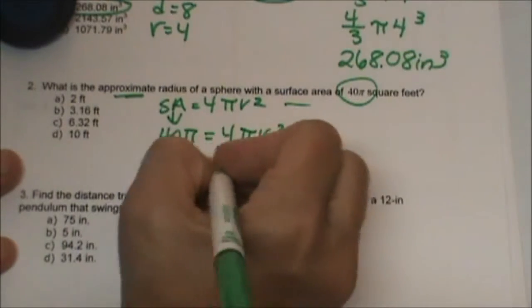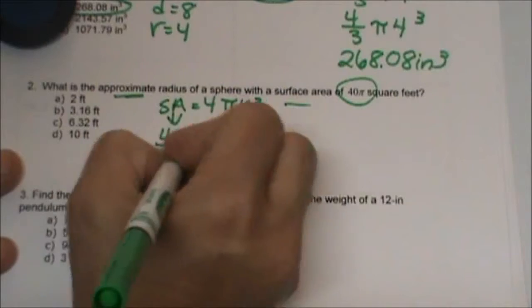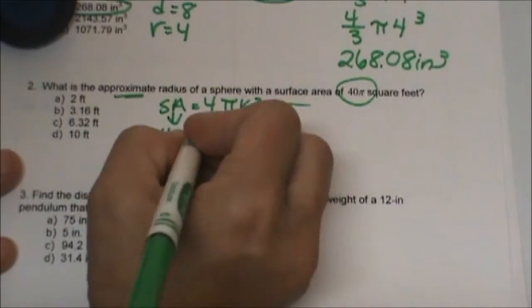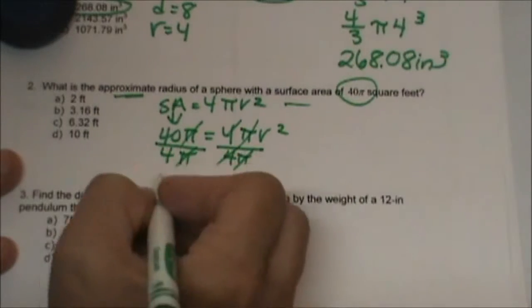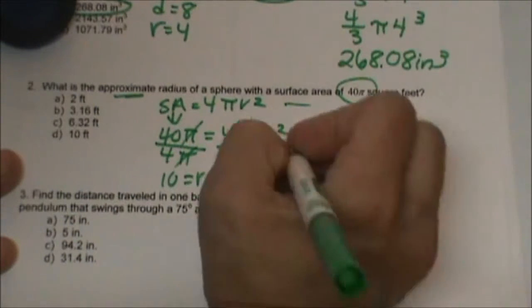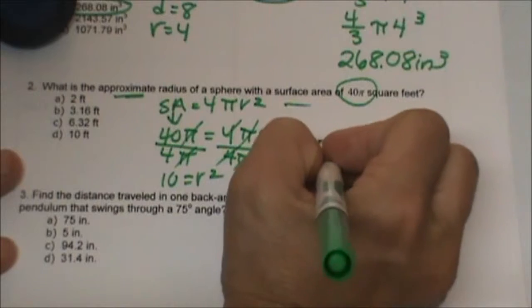To algebraically solve this we are going to divide by 4π. The π is cancelled. I am just left with 10 equals r². That means r is the square root of 10.